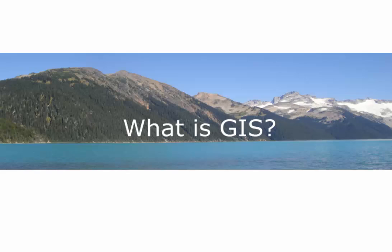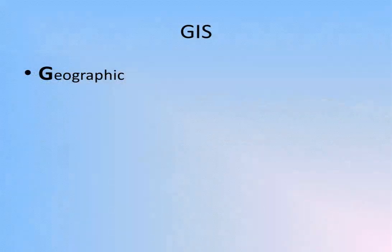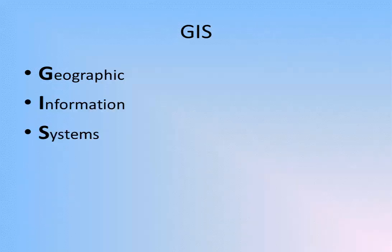The term GIS is an acronym for Geographic Information Systems. A GIS is any information system that has a spatial or geographic component to it. As I stated earlier, many of us use a GIS without even being aware that it is actually a geographic information system.